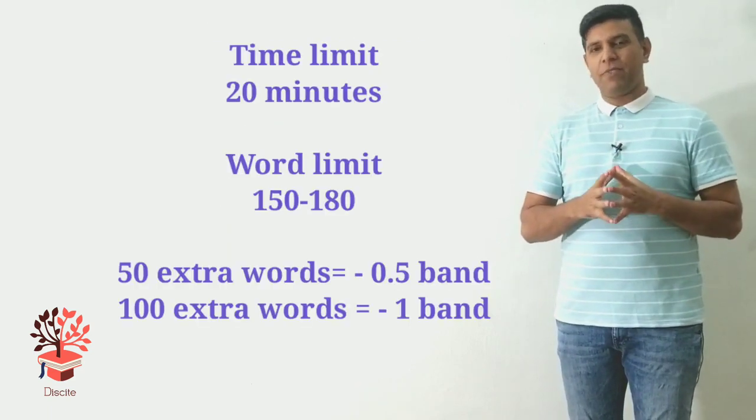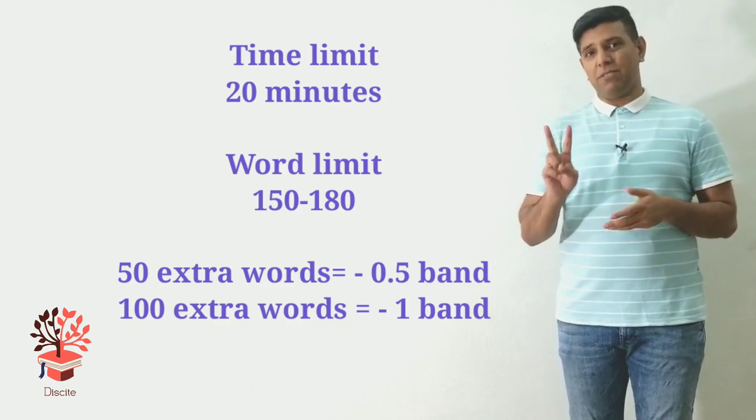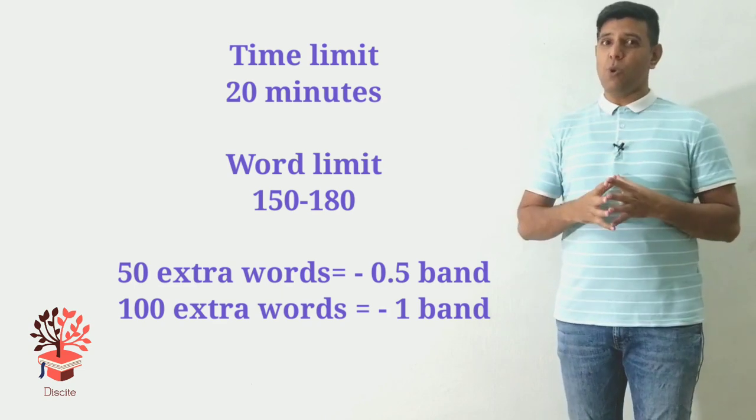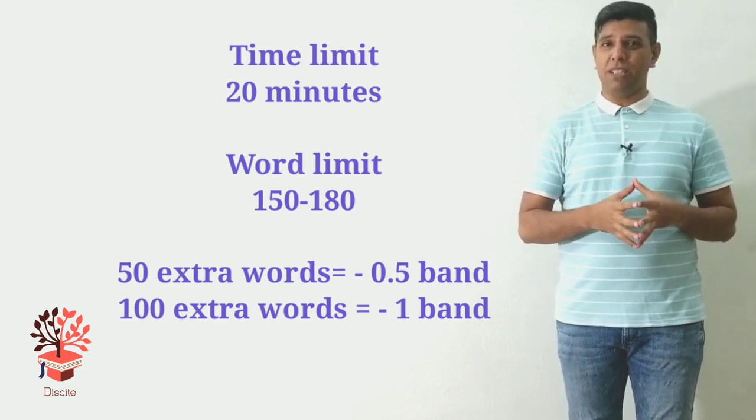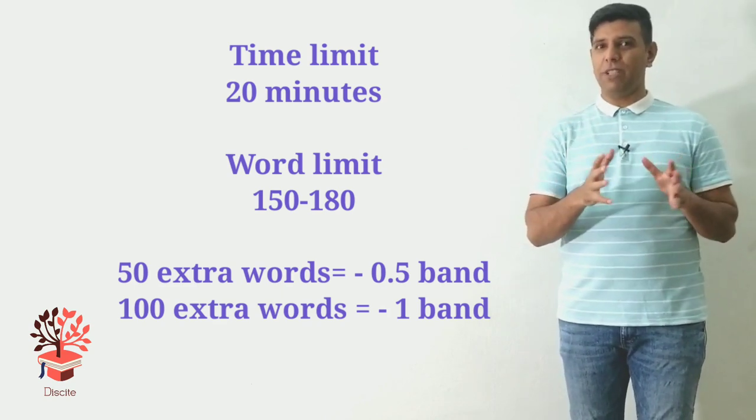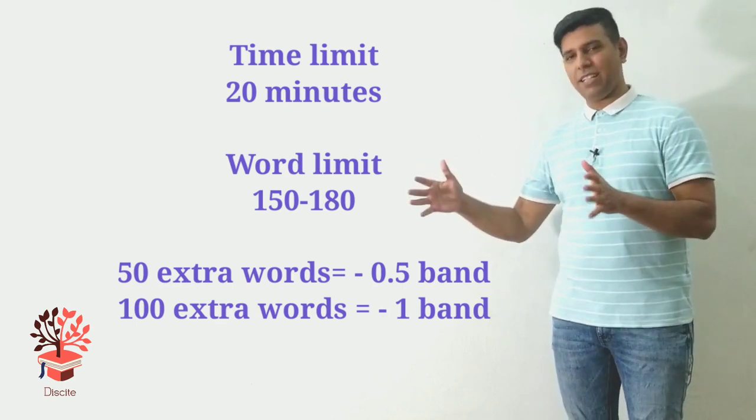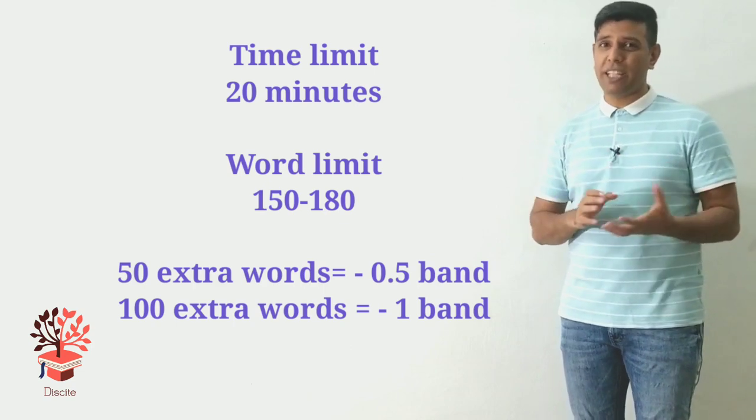Whenever you're writing a graph, remember: you have 20 minutes for it, and it makes up one-third of the score of your IELTS writing part. Spend the first five minutes planning, then the next 10 to 12 minutes writing, and the last three minutes checking.